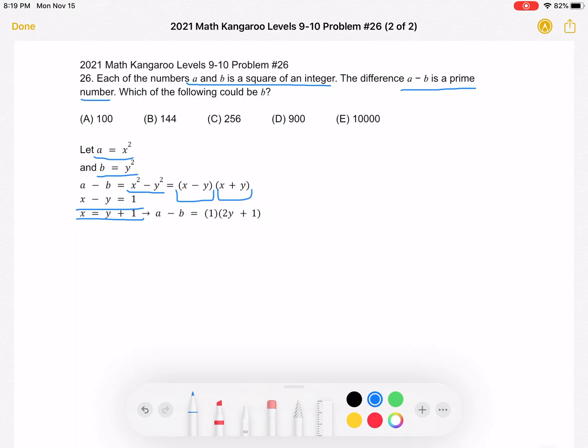And now we can rewrite A minus B, which we again know is a prime number as being 1, and that's x, the quantity of x minus y, times the quantity of 2y plus 1,